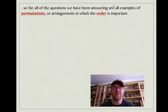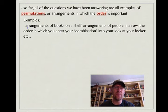So far, all of the questions we have been answering are examples of permutations, or arrangements in which the order is important. Examples include arrangements of books on a shelf, arrangements of people in a row, and the order in which you enter your combination into your lock at your locker. The reason that combinations is in quotation marks is because a combination lock isn't actually a combination, it's a permutation, because the order is important.